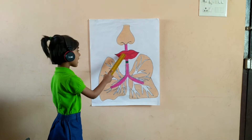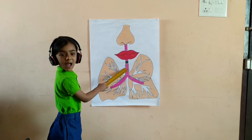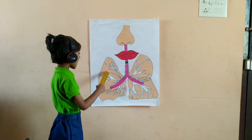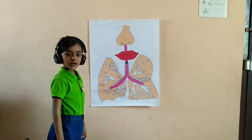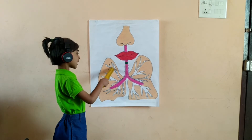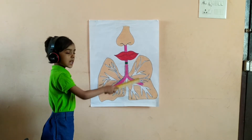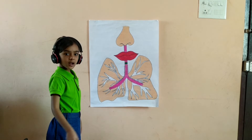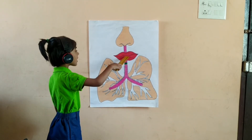Nose, mouth, bronchi, lungs. Our body has two lungs. We cannot survive without oxygen. Let's take in oxygen. Lungs take in oxygen and exhale carbon dioxide through nose and mouth.